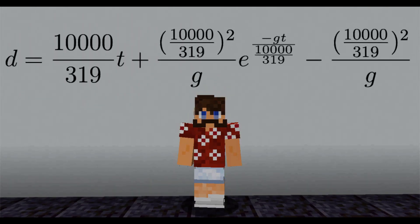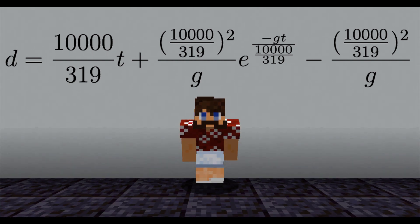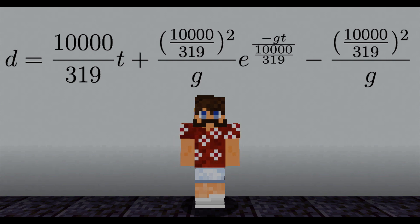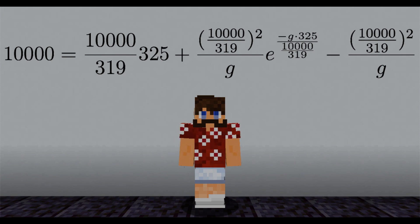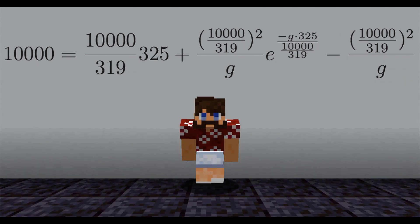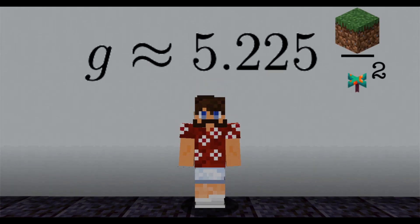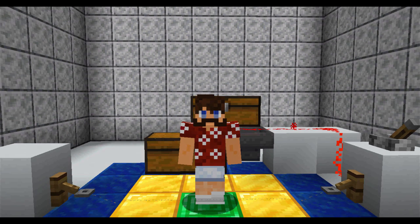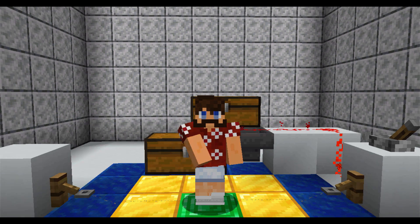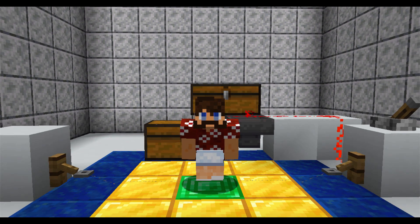This means the distance equation in Minecraft is the following. Substituting in distance and time from one of our points, we have the equation that g satisfies. With computer assistance, we find g is approximately 5.225 blocks per warped fungus squared. Let's test this model before converting to meters per second squared.